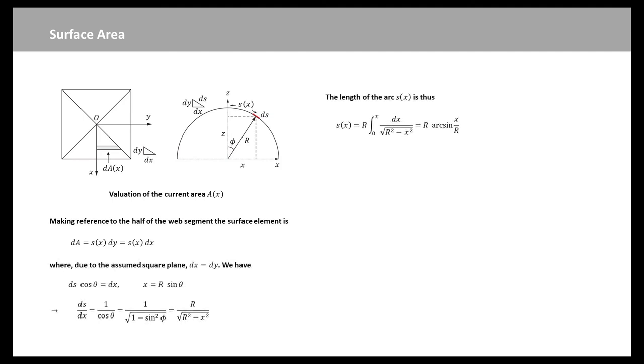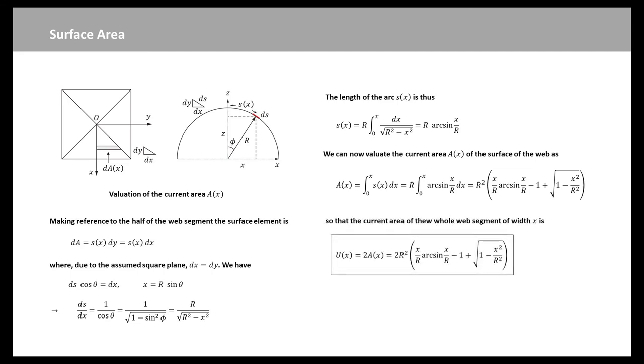Due to the assumed square plane, dx equals dy. After the mathematical derivations, we obtain the length of the arc Sx equation. Now we can evaluate the current area Ax of the surface of the half web as this expression. Therefore, the current area of the whole web segment of width x is shown here. If we consider the dependence on the angle phi, the current area of the whole web segment is expressed here. The surface areas of webs can be used to calculate the weights and centroids of the webs.